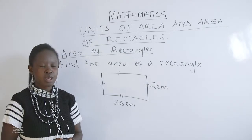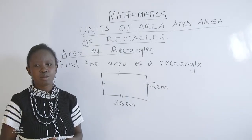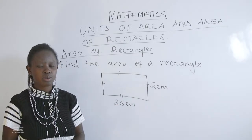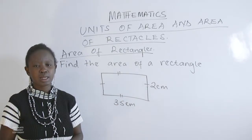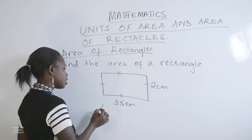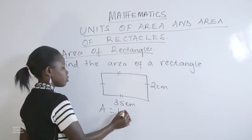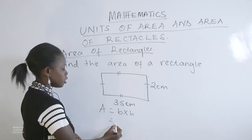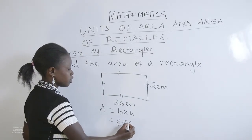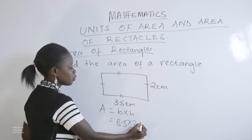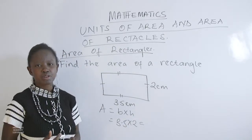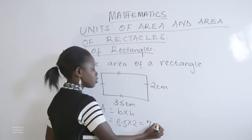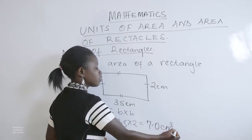The next rectangle has a base of 3.5 centimeters and a height of 2 centimeters. We calculate the area by base times height: 3.5 times 2 gives us 7.0 square centimeters.